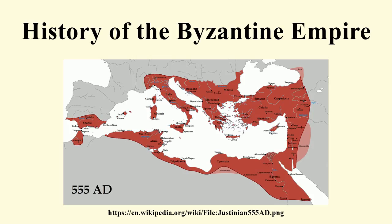Pope Agapetus I was sent to Constantinople by Theodahad in order to request the removal of Byzantine forces from Sicily, Dalmatia, and Italy. Although Agapetus failed in his mission to sign a peace with Justinian, he succeeded in having the Monophysite patriarch Anthimus I of Constantinople denounced despite Empress Theodora's support and protection. Nevertheless, the Ostrogoths were soon reunited under the command of Totila and captured Rome on 17 December 546.